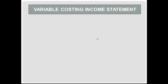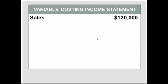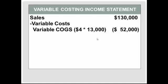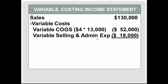Now we can prepare our income statement. The variable costing income statement uses the contribution margin format, so we begin with sales of $130,000, then subtract variable costs. We typically have both production costs and selling and administrative costs. The variable cost of goods sold is $4 per unit times 13,000 units sold, or $52,000. Variable selling expenses of $18,000 were incurred and are expensed — period costs are expensed in the period incurred.